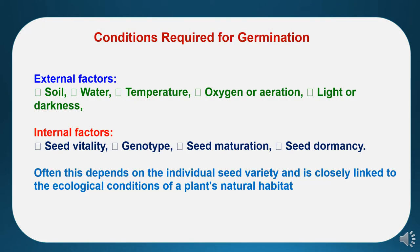Now, to study the conditions required for germination, these can be categorized into two types: external factors and internal factors. External factors cover soil, water, temperature, oxygen or aeration, and light or darkness. Internal factors cover seed vitality, genotype of the seed, seed maturation, and seed dormancy. These conditions often depend on the individual seed variety and are closely linked to the ecological conditions of the plant's natural habitat.